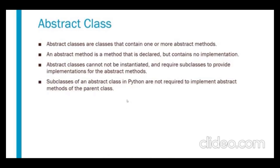Welcome everyone. In this video we are going to learn about abstraction in Python. Abstract classes are classes that contain one or more abstract methods. An abstract method is a method that only has a definition but no body — it doesn't have any implementation.